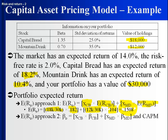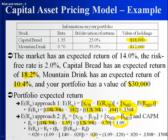The second approach is to take a weighted average of the two betas to find the portfolio beta, then apply the CAPM. With $18,000 of $30,000 in Capital Bread at β=1.35 and $12,000 of $30,000 in Mountain Drink at β=0.7, the portfolio beta is 1.09. Applying CAPM: 2% if there's no risk, plus 109% of the 12% market premium equals 13.08%, plus 2% gives 15.08%. It doesn't matter which approach you use — both give the same answer.